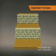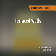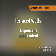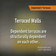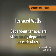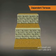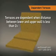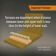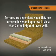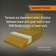There are two types of terraced walls: dependent and independent. Dependent terraces are structurally dependent on each other. For more information about independent terraces, go to the Independent Terrace section. Terraces are dependent when the distance between the lower wall and the upper wall is less than two times the height of the lower wall.